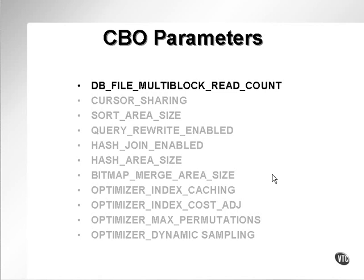If you have an OLTP database and you want to read a single row, there's not much point in reading 32 blocks, because you could be reading thousands, hundreds, or millions of rows depending on your row size and block size. In a data warehouse, which is heavily IO dependent, it makes sense to have an extremely high DB File Multi-Block Read Count, because most reads will generally read entire tables or large portions of data in a single set.